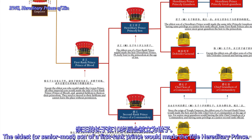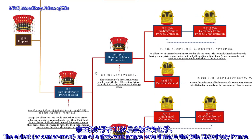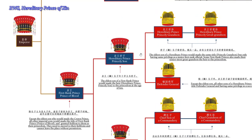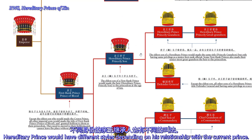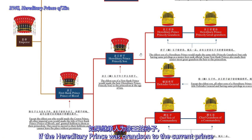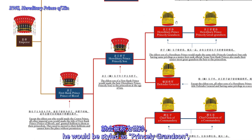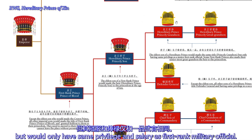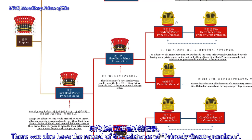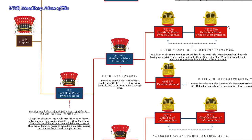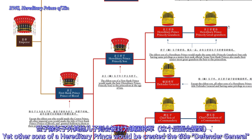The eldest son of a first-ranked prince would receive the title of Hereditary Prince. Like the Emperor's heir, the Hereditary Prince would have different styles depending on his relationship to the current prince. If the Hereditary Prince was the grandson of the current prince, he would be styled Princely Grandson, but would only have the same privileges and salary as a first-ranked military officer. Other sons of a Hereditary Prince would be created the title of Defender General.